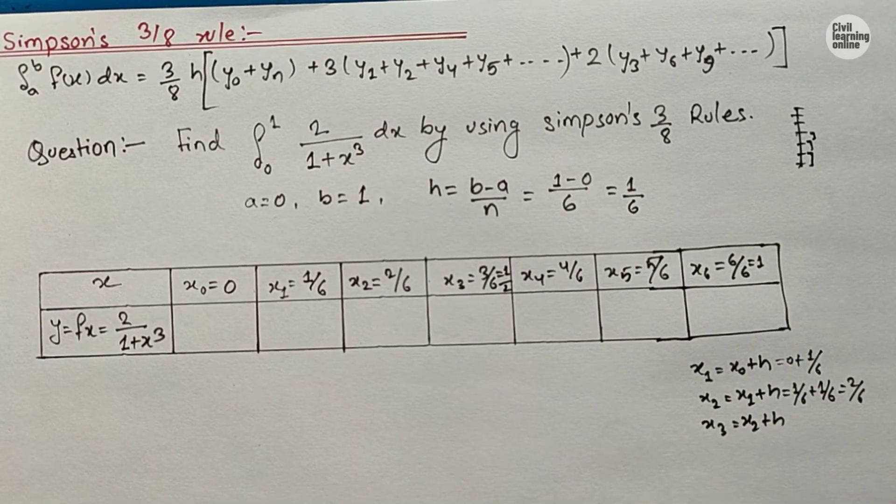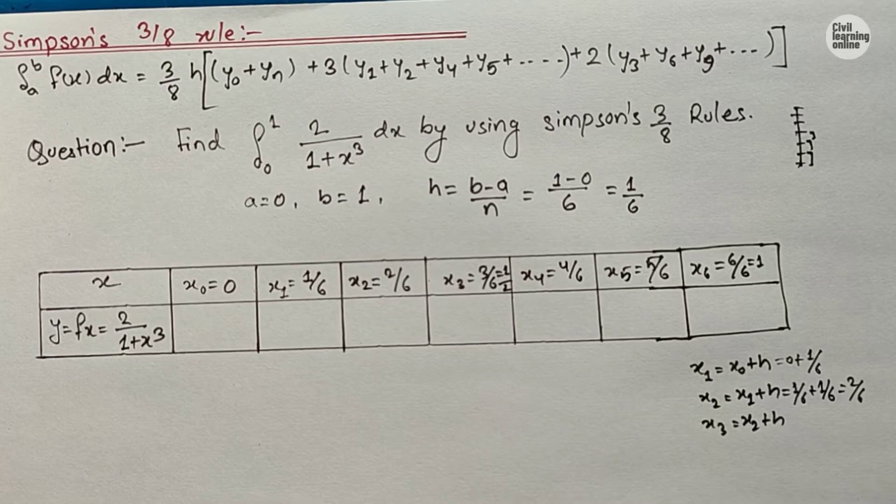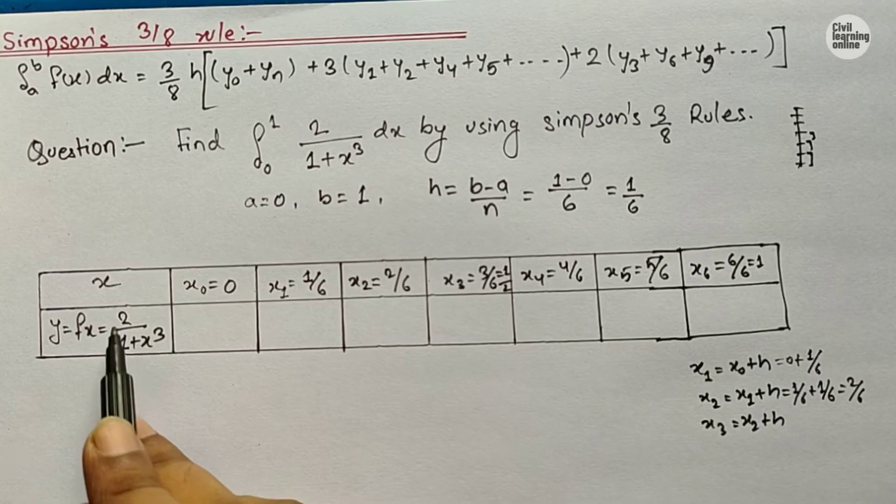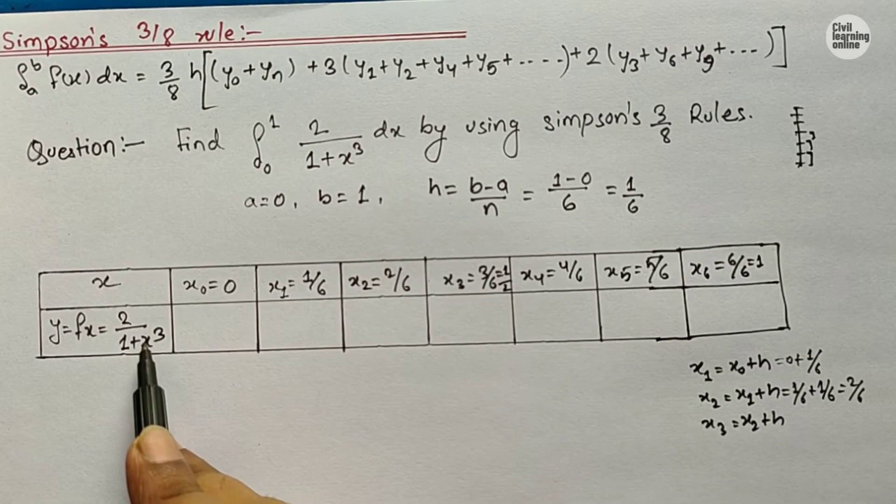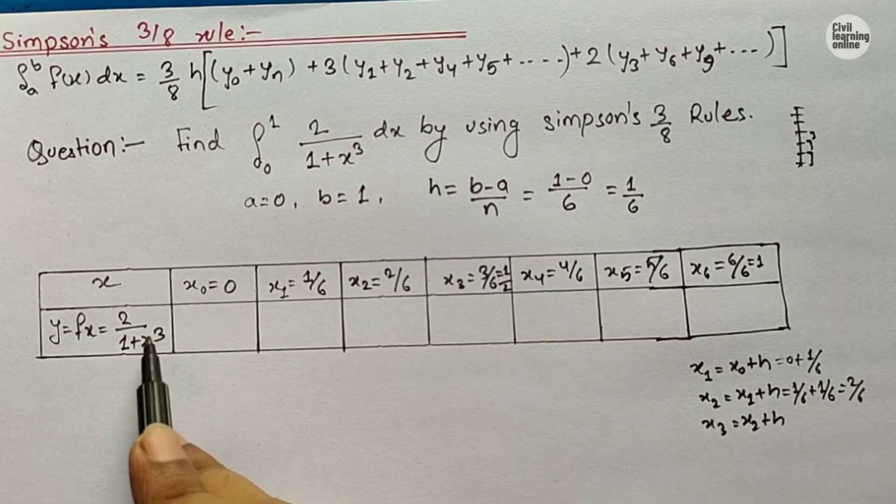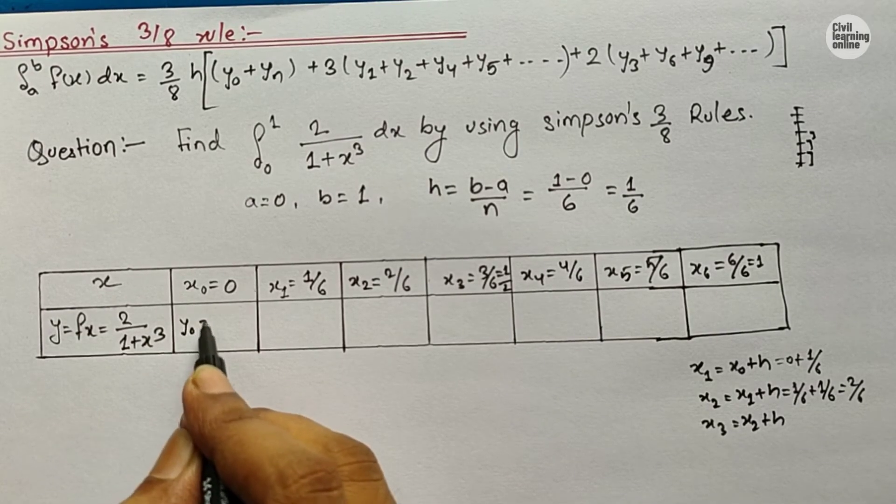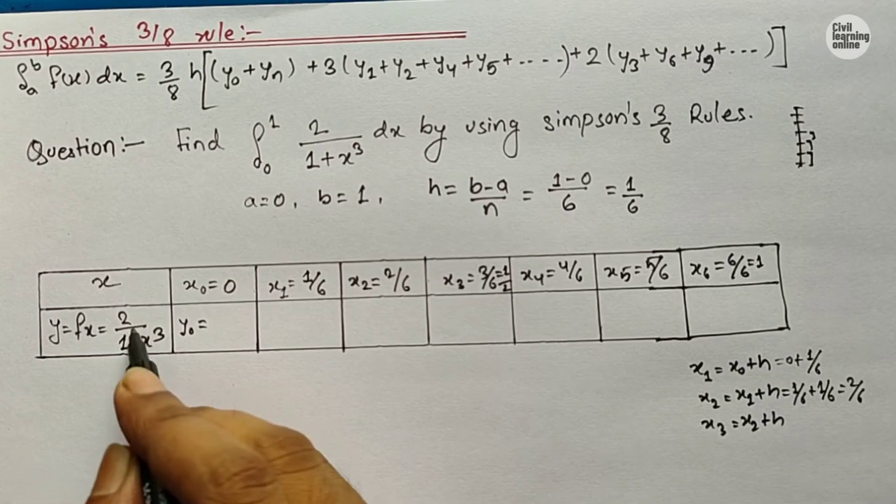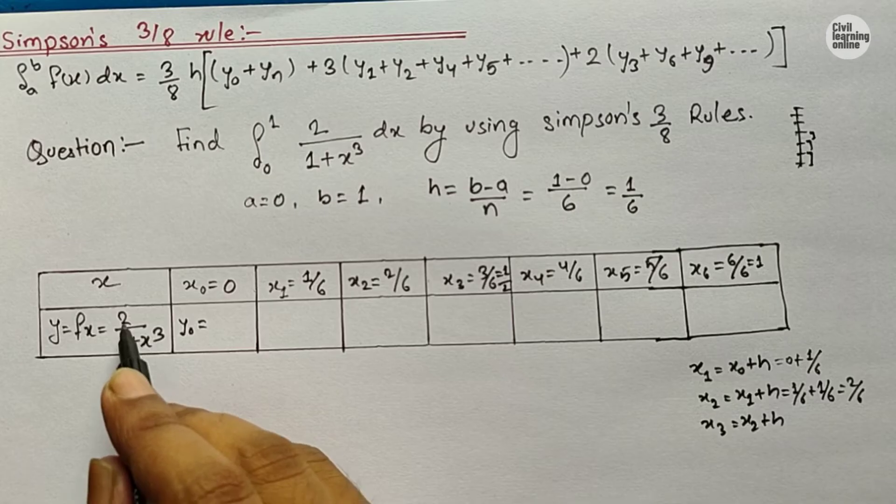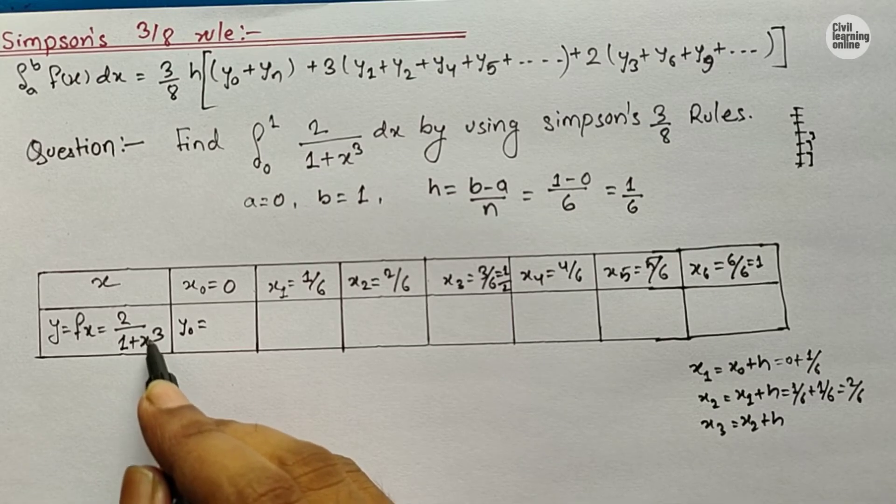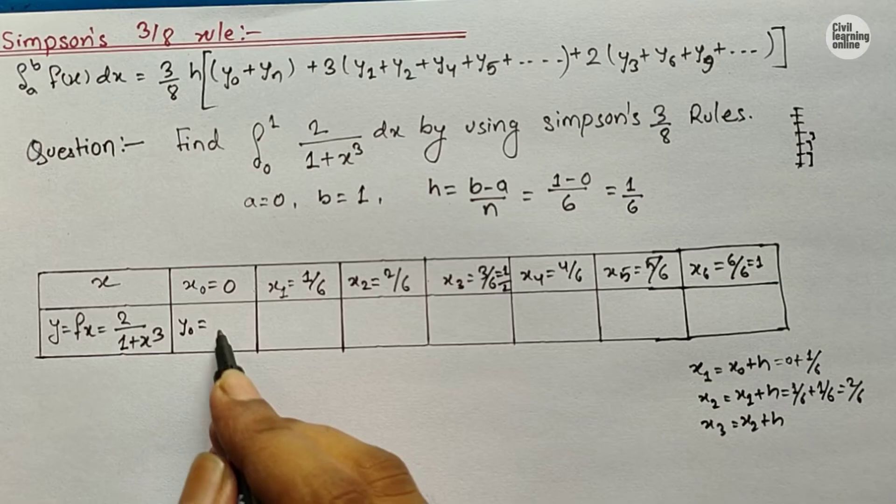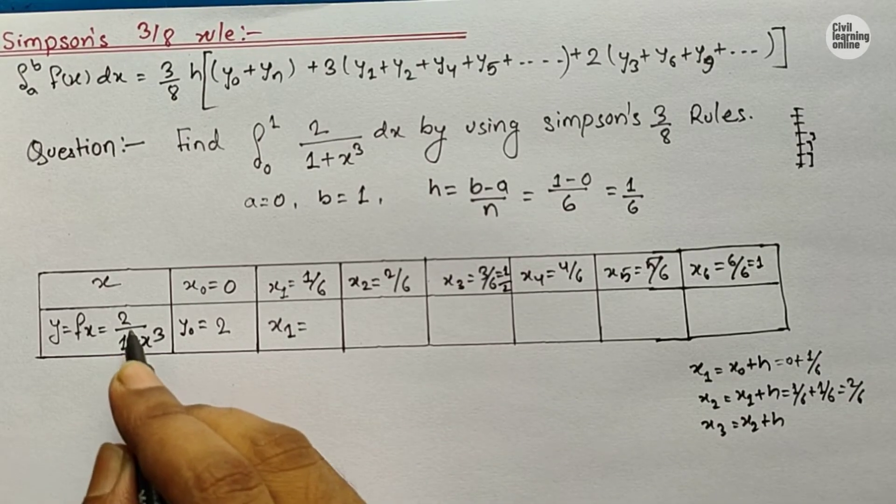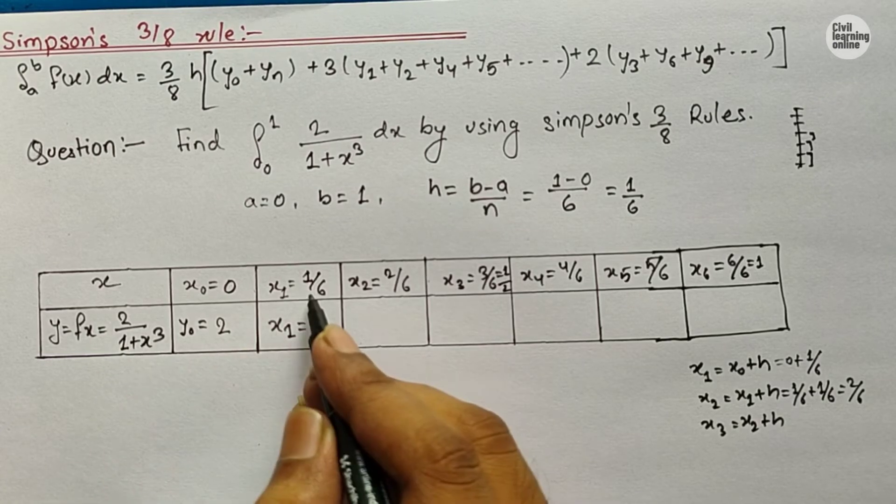Now what we need to do is put the corresponding value of x here in this equation. Here we have 2/(1+x³). So in place of x we will put x equals 0. Then that will be our value of y0. On putting the value of x0 here, we will get the value of y0. So 2/(1+0³) equals 2/1, which equals 2. Similarly, y1 equals 2/(1+(1/6)³).